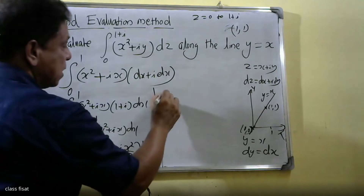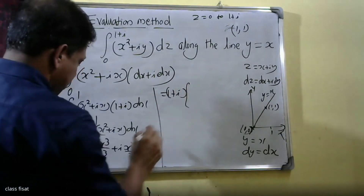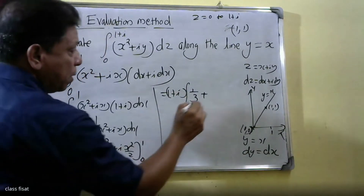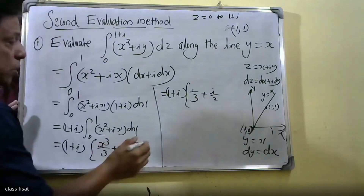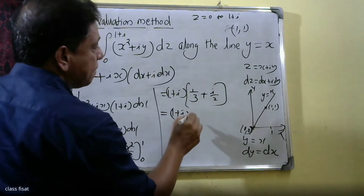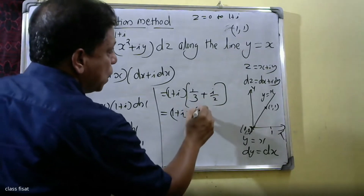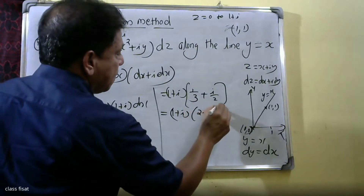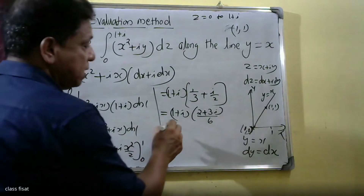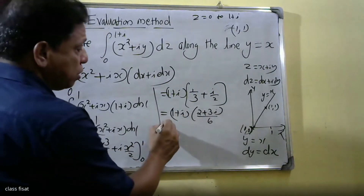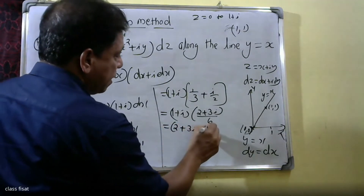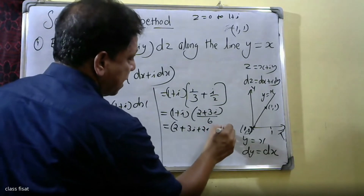That is 1 plus i into x, with upper limit giving 1/3 plus 1/2, and lower limit 0. Then 1 plus i times (2 plus 3i) divided by 6. Expanding: 2 plus 3i plus 2i plus 3i squared, which gives 2 plus 5i minus 3, all divided by 6.